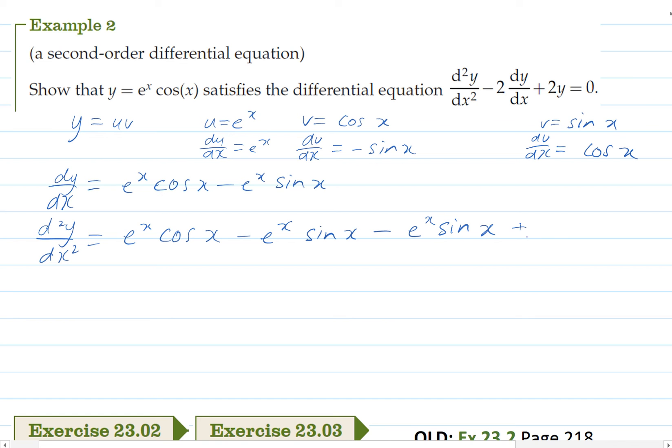actually it will be negative as well, e to the x cos x. Okay so that and that will cancel out and we'll just be left with negative 2 e to the x sin x and that's our value for d squared y by dx squared.